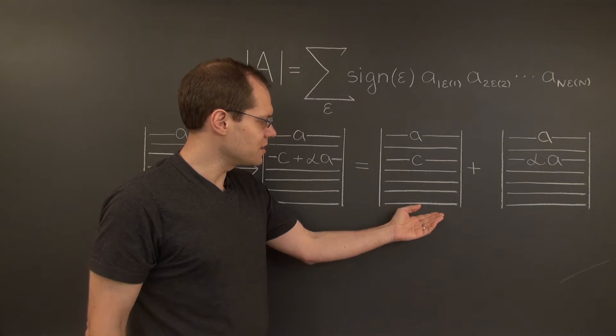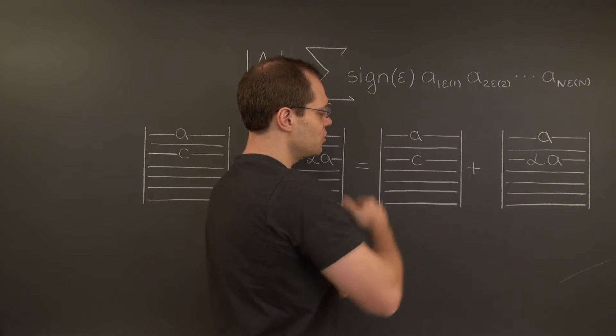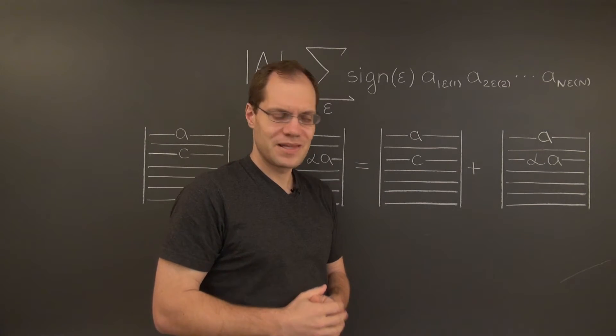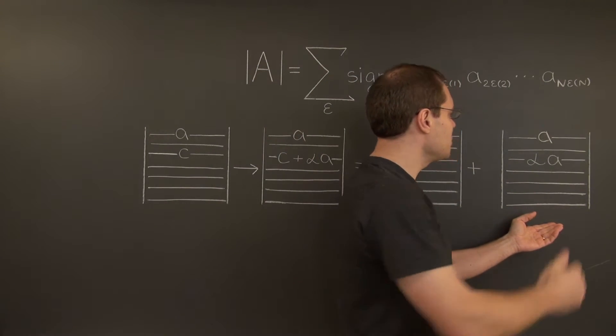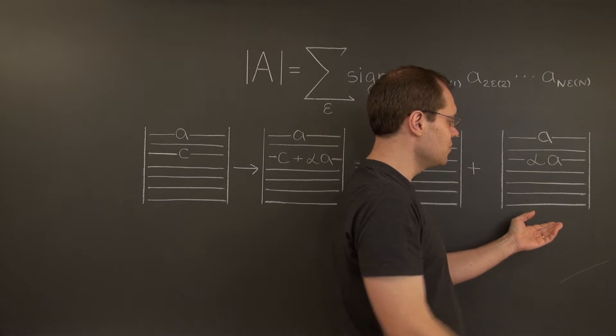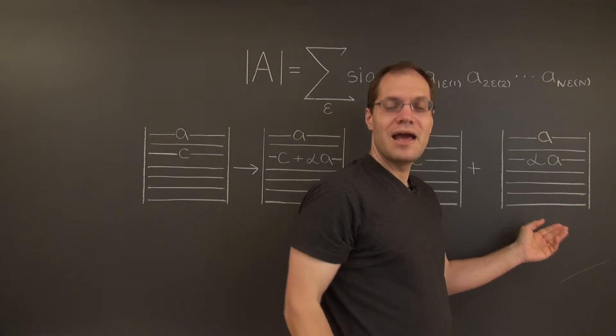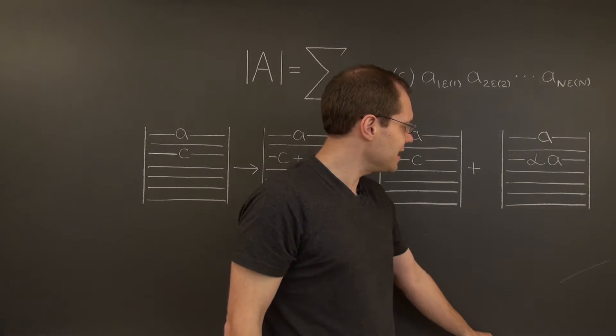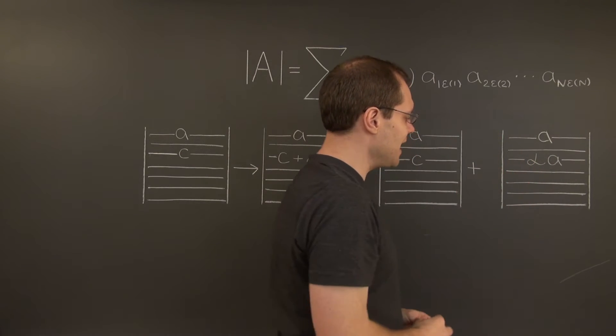where in the first one, you have the third row of the original matrix in its rightful place, and in the second one, you have a multiple of the first row in the third row. And by further application of linearity, you can factor alpha out.